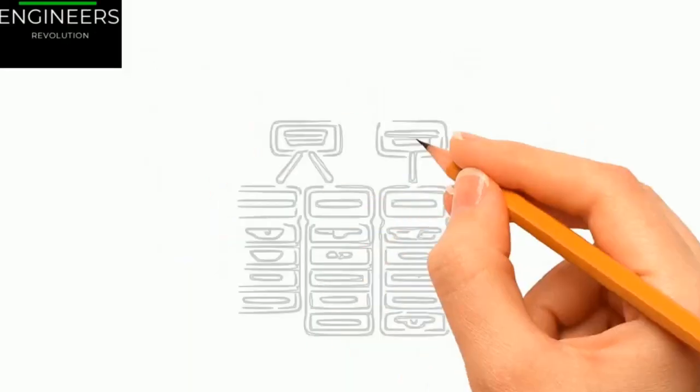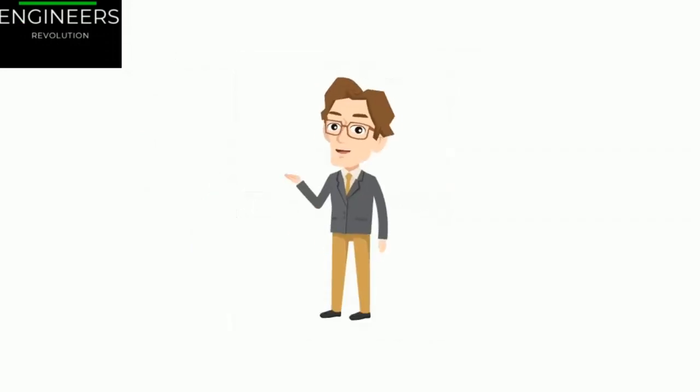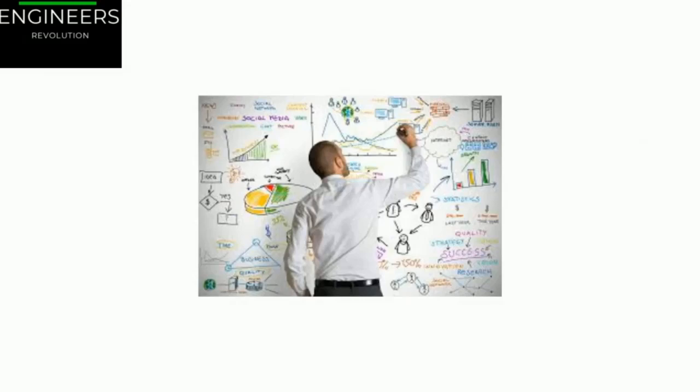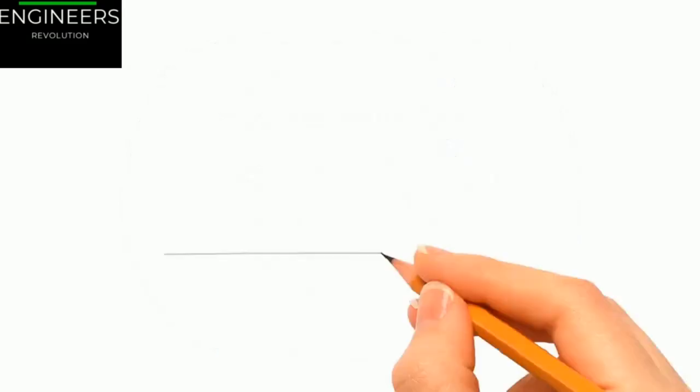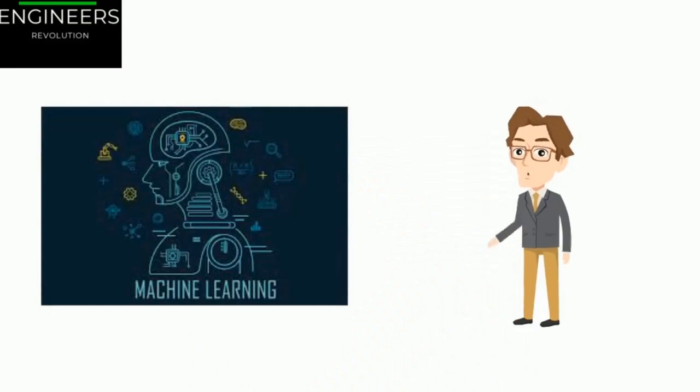To summarize, machine learning is great. Firstly, for problems for which existing solutions require a lot of hand tuning or long lists of rules. It is also great for complex problems for which there is no good solution at all using a traditional approach. Finally, it is also good for fluctuating environments, as machine learning systems can adapt to new data.